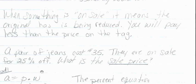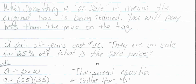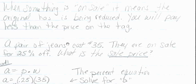We're going to use the percent equation a equals p times w. Now the pair of jeans cost $35, so 35 is the original cost - it's the whole value of what they are. So we're going to find what 25% of 35 is.